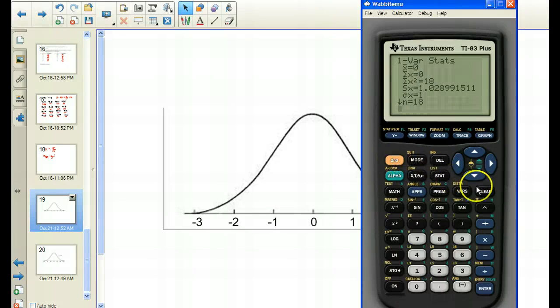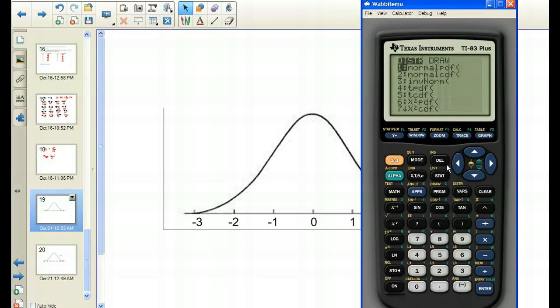Our other part of the discussion this week centered around these three values from your distribution menu. Second VARS takes you to the distribution menu, DISTR: normal PDF, normal CDF, and inverse normal. This is the thing I asked you to research.